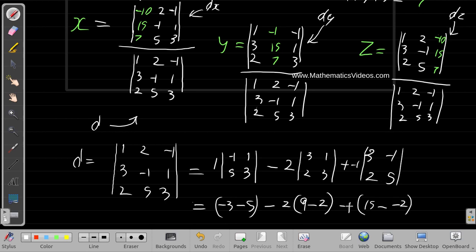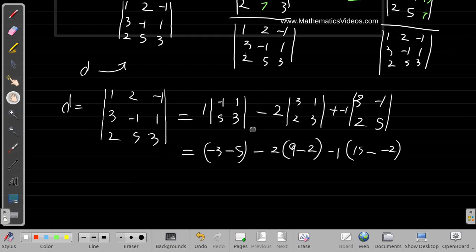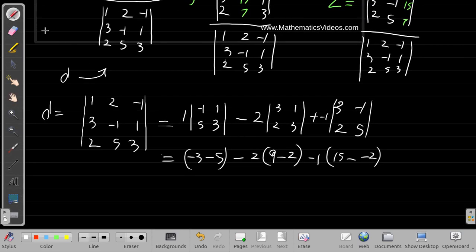By the way, remember if you watched the last video, we did this already and we got negative 39 as the determinant. Let's see if we can get back the same thing. If you don't get back negative 39, you made a mistake. So negative three minus five is negative eight.